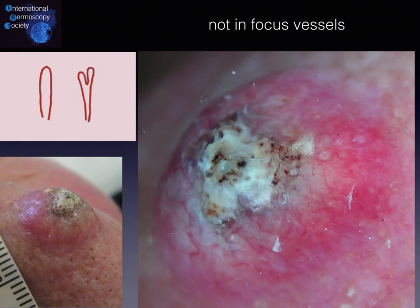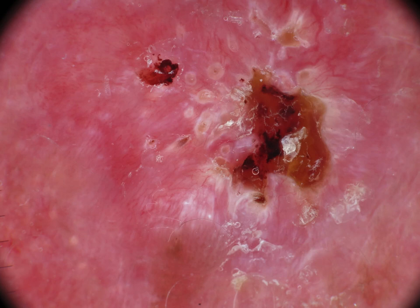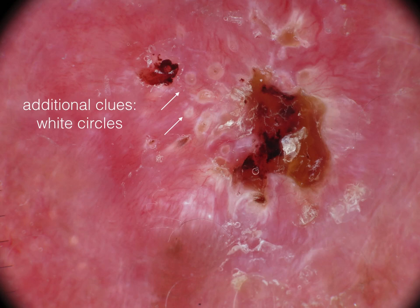Another clue when we speak about hairpin vessels: as you can see in this squamous cell carcinoma, we see looped vessels with the whitish color being prominent, and the clinical picture fitting with this exophytic squamous cell carcinoma. Of note, usually the hairpin vessels are not in focus. And lastly, when we have hairpin vessels at the periphery, not in focus, surrounded by a whitish halo, we may also have additional clues such as white circles that, together with the hairpin-shaped vessels, speak in favor of a squamous cell carcinoma diagnosis.